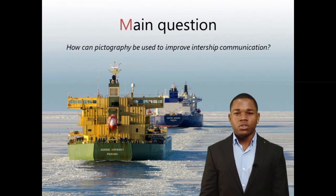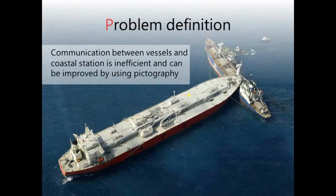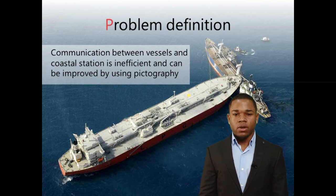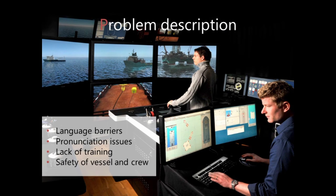Now to answer this question, you will have to look at the problem itself. Therefore, we have our problem definition and our problem description. Our problem definition goes as follows: communication between vessels and coastal stations is inefficient and can be improved by using pictography. Then we have our problem description, which in the first place includes language barriers — mostly one of the main causes of misunderstanding and accidents in the maritime industry.